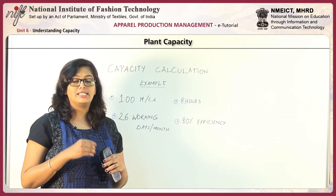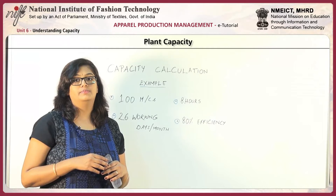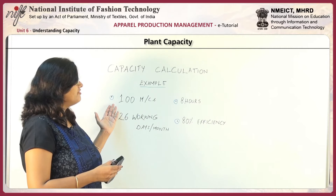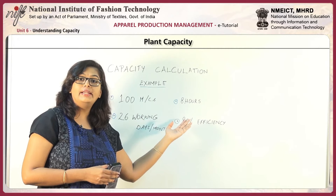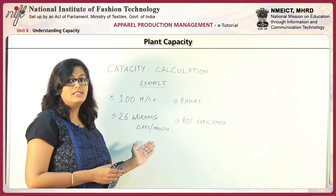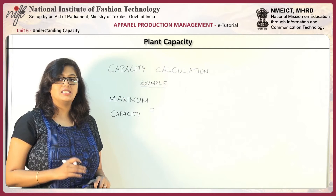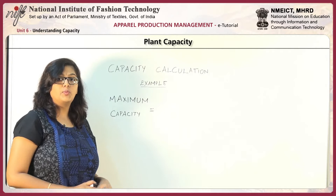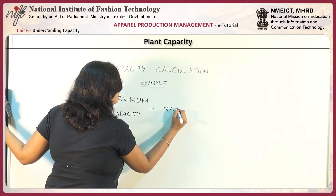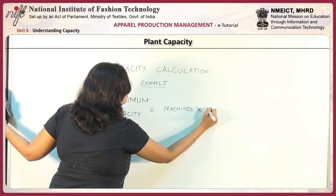Now that we have understood the terminologies in capacity, let us try to understand how calculations are done. If a factory has 100 working machines working for 8 hours in a day, they have 26 working days per month, and the efficiency of the operators is at 80 percent. Maximum capacity can be calculated with the number of machines and the time available.